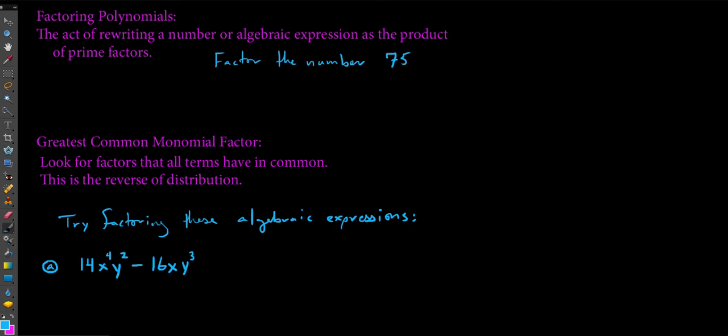So let's take a look here. It says factoring polynomials. I write that this is the act of rewriting a number or algebraic expression as the product of prime factors. When we talk about prime, we mean that these are factors that only, their only factors are one and themselves. So five would be considered a prime number just because we couldn't break it down any more than that.